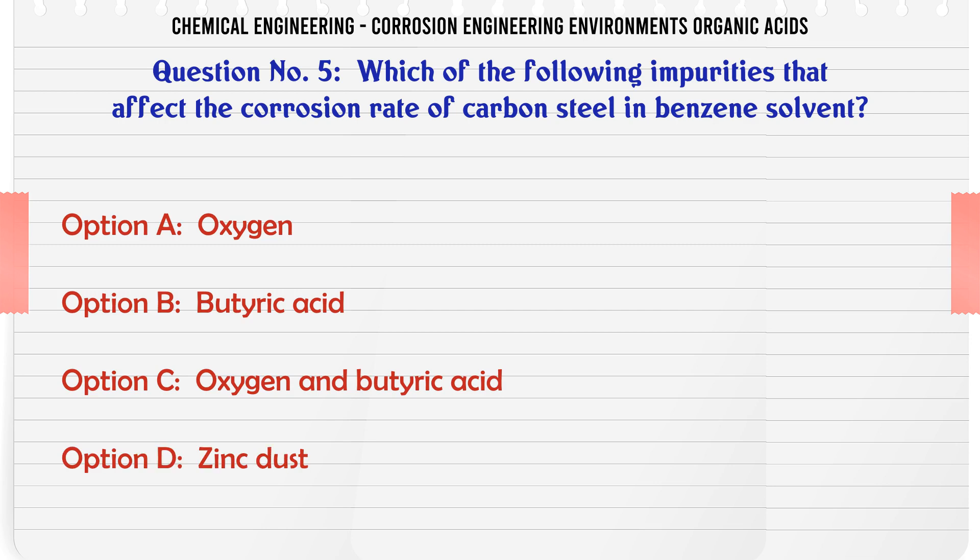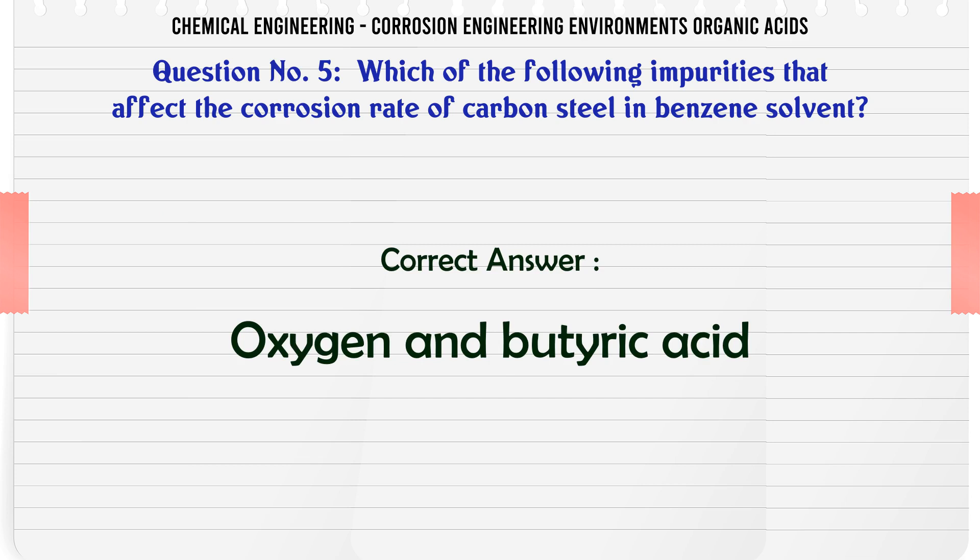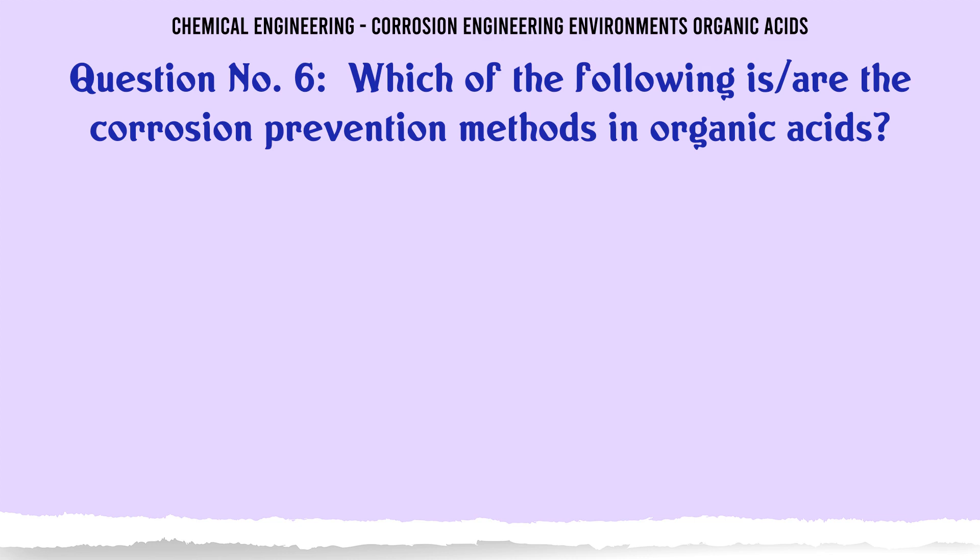Which of the following impurities affect the corrosion rate of carbon steel in benzene solvent? A. Oxygen, B. Butyric acid, C. Oxygen and butyric acid, D. Zinc dust. The correct answer is Oxygen and butyric acid.